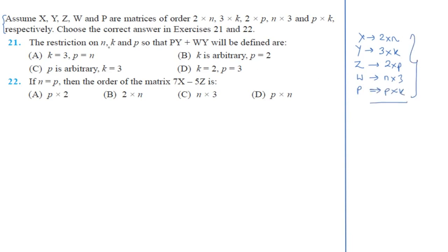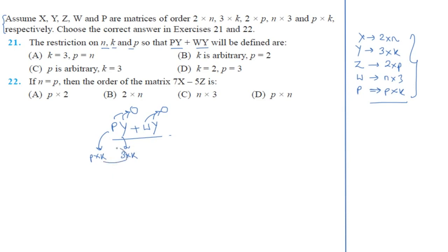The restrictions on n, k, and p so that PY + WY will be defined: first, the product PY must be possible. The order of P is p×k and the order of Y is 3×k. For PY to be possible, k must equal 3. So k = 3 is the first restriction.